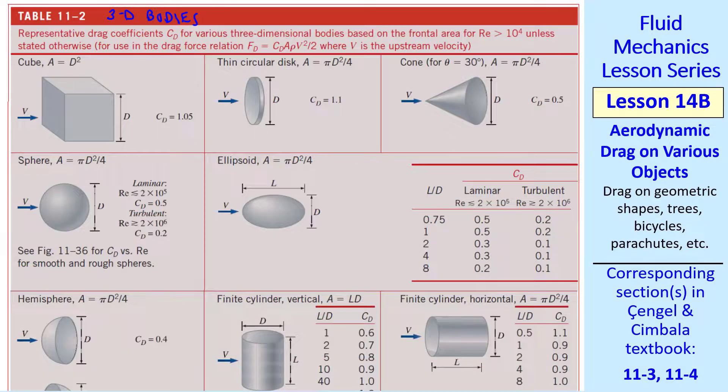Now let's look at 3D bodies - a cube, thin circular disc, a cone, a sphere, an ellipsoid. We'll talk in more detail about spheres in a later lesson. The behavior is similar to that of cylinders. Most of these drag coefficients for blunt bodies like this are close to 1.